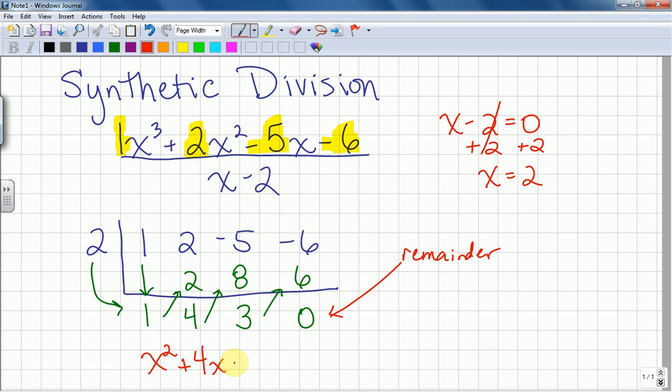I look to the 3. Since it's positive, I say plus 3. So the answer to our division problem is x squared plus 4x plus 3. This divided out evenly, so we had no remainder. That's just one example of synthetic division.